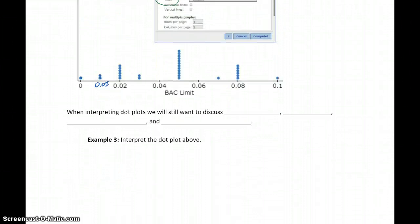Whenever we construct dot plots or work with dot plots, we still want to discuss shape, center, spread, and outliers. So using this graph that's been generated above, let's provide an interpretation. First, we can talk about the shape of our distribution.